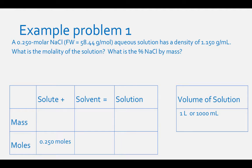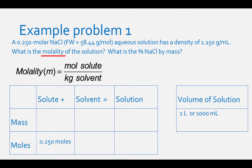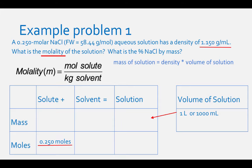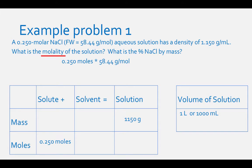Molality is moles of solute divided by kilograms of solvent. We already know the moles of solute: 0.250 moles. To find kilograms of solvent, first use density to find the mass of solution: mass equals density times volume, so 1.150 g/mL × 1,000 mL = 1,150 grams of solution. Then convert moles of solute to grams: 0.250 mol × 58.44 g/mol = 14.61 grams of NaCl.